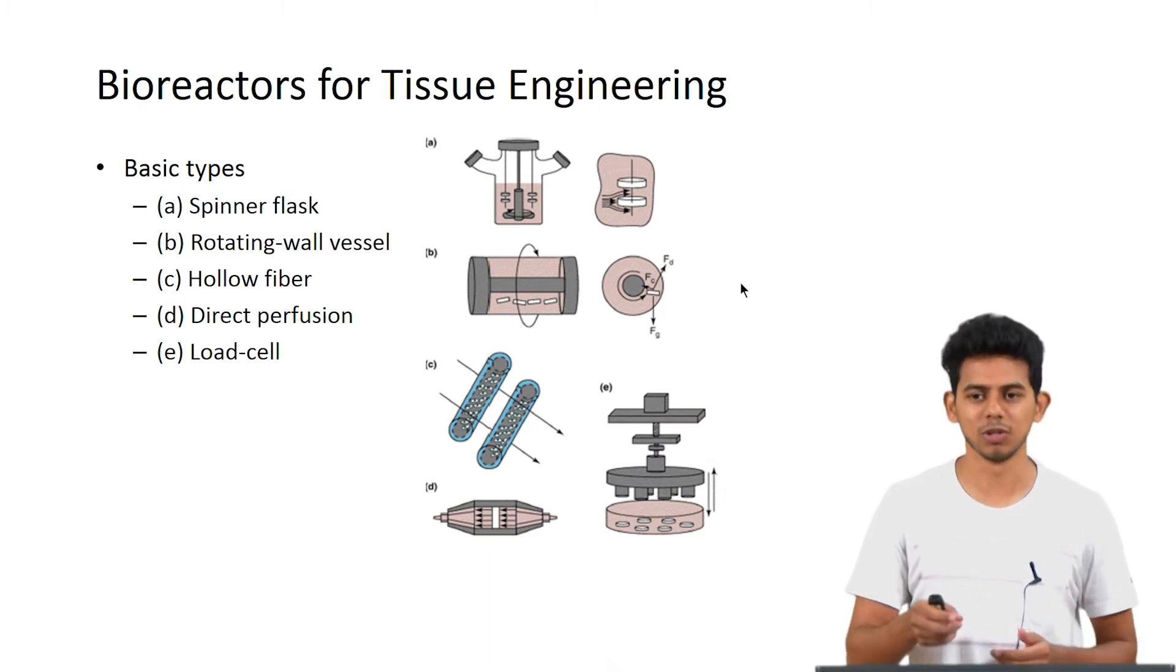Then hollow fibers. These hollow fibers have capillaries which run through them carrying the media and the media can actually diffuse out outside. On the outer surface of these capillary tubes there are cells which are seeded on it. The spent media is then taken out and it can be recycled and circulated again.